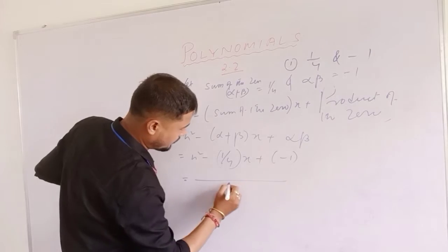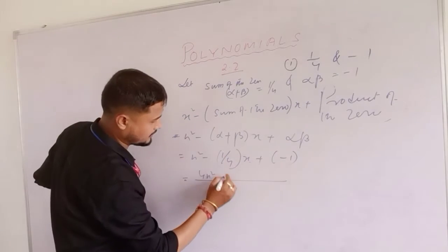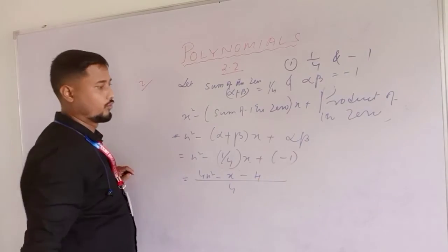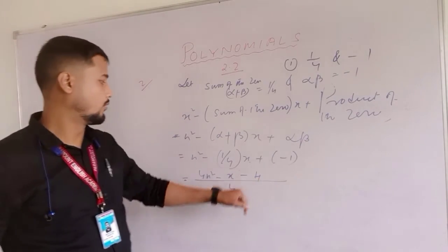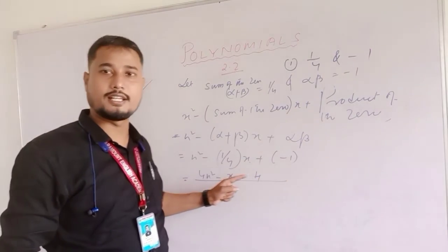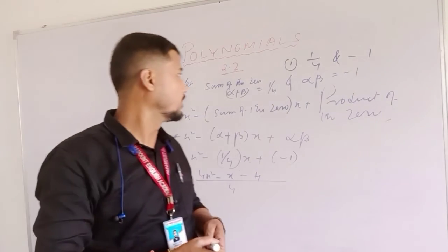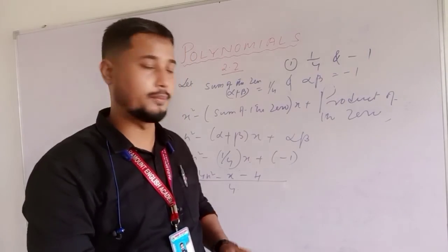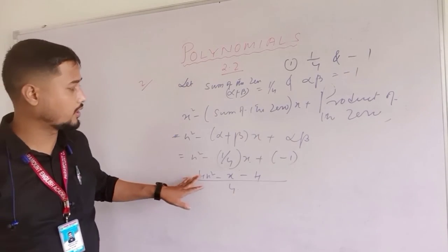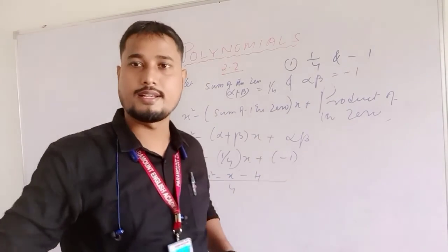Multiplying through by four: four x squared minus x minus four. So the required quadratic polynomial is four x squared minus x minus four.